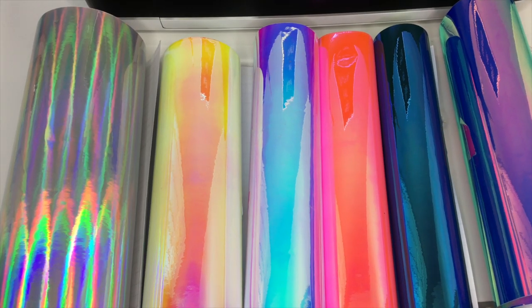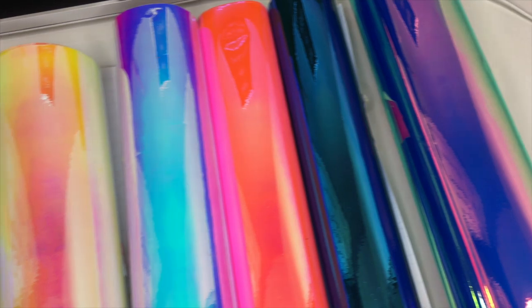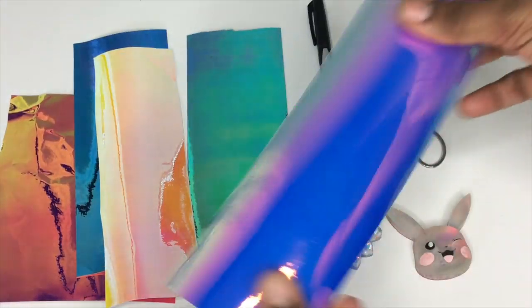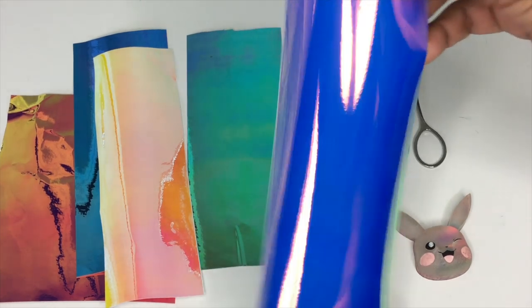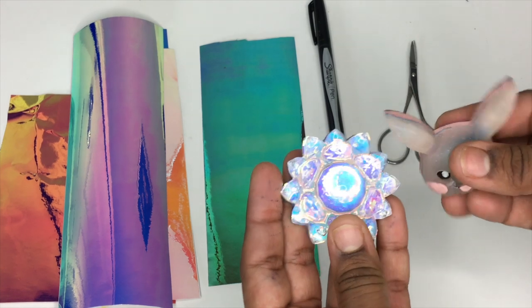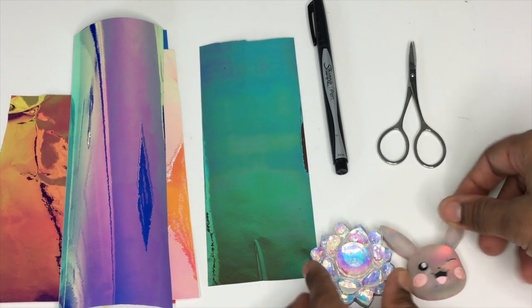So the way that I get the holographic effect is by using holographic vinyl. I mainly use vinyl from Cricut or from Tech Wrap Craft on Amazon. So here I have a few scraps of vinyl as well as two charms that didn't work out that I'll be using for tracing, as well as a pair of scissors and a sharpie pen.